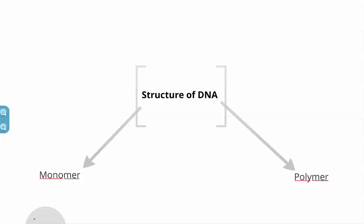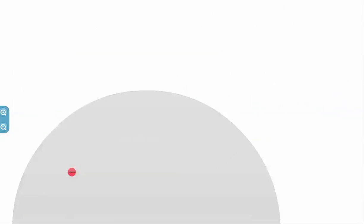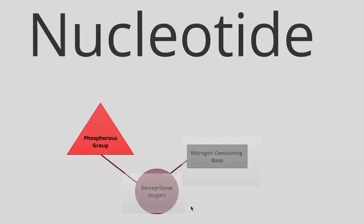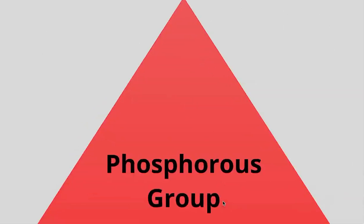The monomer is one part of the DNA and polymer is the many parts put together. Now each monomer is made up of something called a nucleotide. On your worksheet it says draw a picture of a nucleotide below. Make sure to use different colors for the different shapes. You're going to make a triangle for the phosphorus group, a circle for the deoxyribose group, and a rectangle for the nitrogen-containing base.